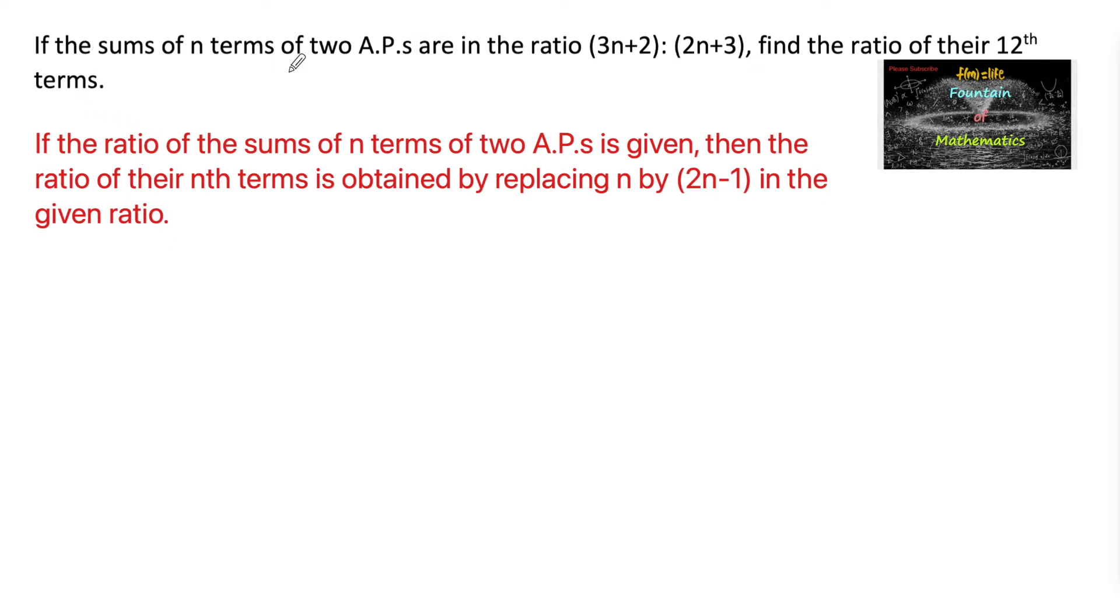If the sums of n terms of 2 APs are in the ratio (3n+2):(2n+3), then find the ratio of their 12th terms. Given the sums of n terms of 2 arithmetic progressions are in the ratio (3n+2) to (2n+3).